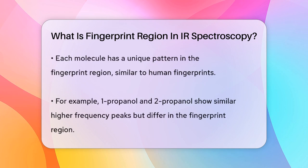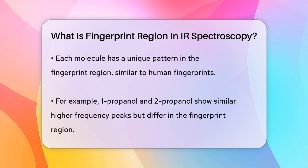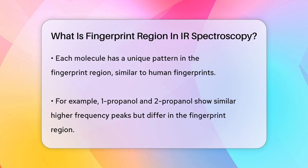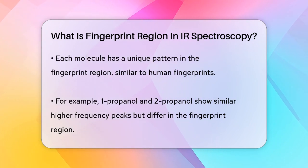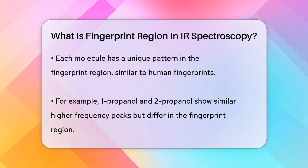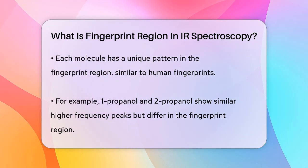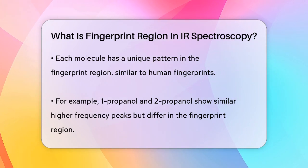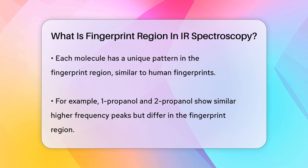For example, if you compare the IR spectra of 1-propanol and 2-propanol, both will have similar peaks in the higher frequency regions because they contain the same types of bonds. However, when you look at the fingerprint region, the patterns of peaks are completely different. This difference allows you to identify which compound you're dealing with, even if they have the same functional groups.